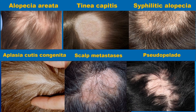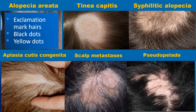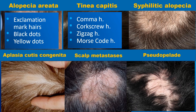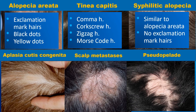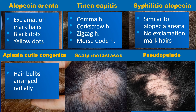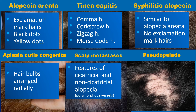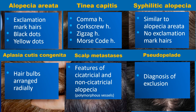I have shown six images of hair loss that may look like alopecia areata. They included: alopecia areata itself with typical exclamation mark hairs, black dots, and yellow dots; tinea capitis with comma hairs, corkscrew hairs, zigzag hairs, and Morse code or interrupted hairs; syphilitic alopecia, which may be very similar to alopecia areata but without exclamation mark hairs; aplasia cutis congenita with translucent epidermis and radially arranged visible hair bulbs; and scalp metastasis, which shares features of cicatricial and non-cicatricial alopecia in trichoscopy, with the most typical finding being polymorphic vessels together with black and yellow dots.